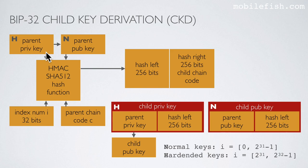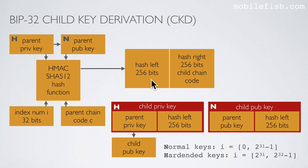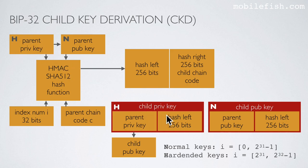If you want to create hardened keys we use the parent private key. If you want to create normal keys we use the parent public key. For hardened keys, for example with index 2 to the power of 31 plus 0, we insert the chain code and the parent private key into the hash function. The hash function creates a hash value. The left part is called hash left and the right part is called hash right. The hash right part is also called the child chain code. The hash left together with the parent private key creates the child private key.